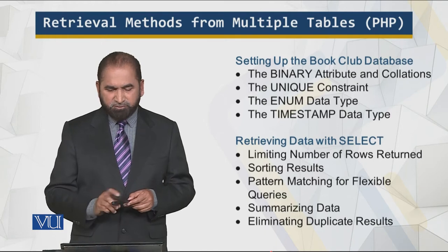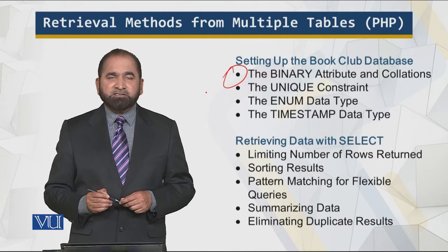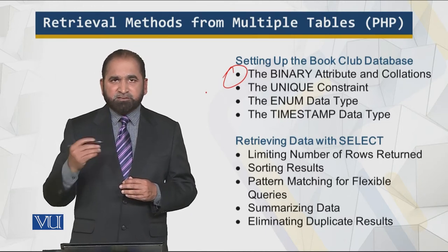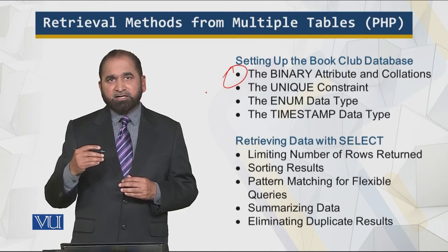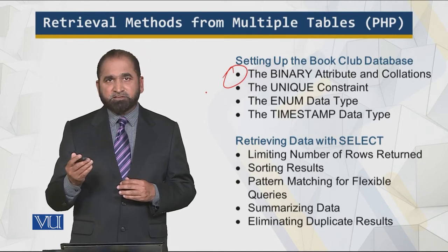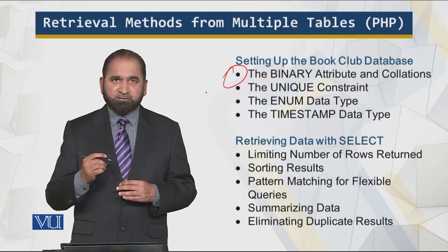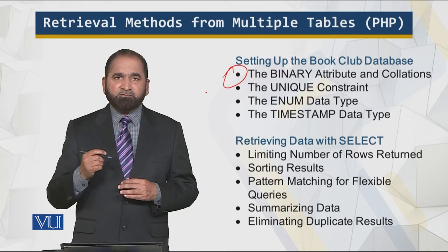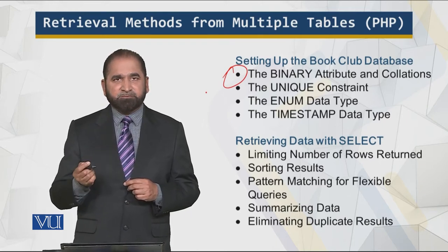We have what we call binary attributes and collations. If I retrieve results from the database, they are sorted and displayed in alphabetical ordering. Something starting with A comes first, then B comes second. By default, capital B and lowercase B are treated the same.